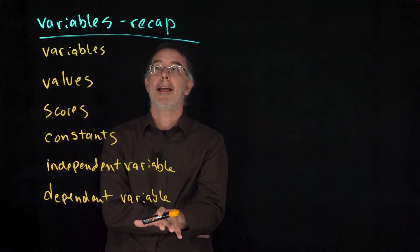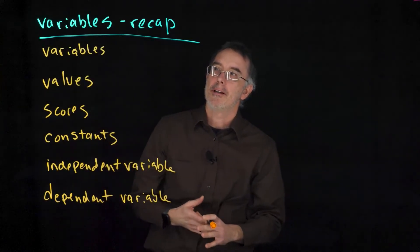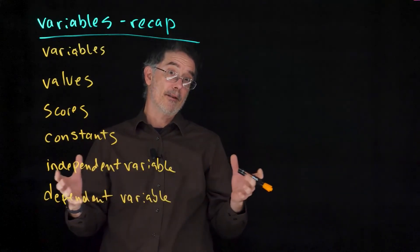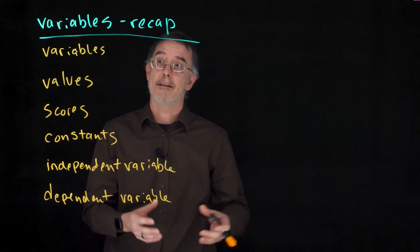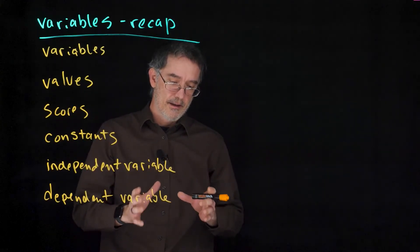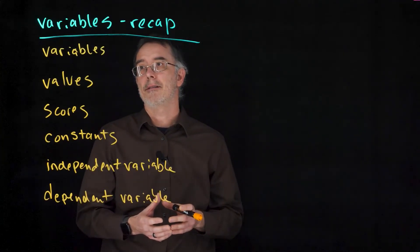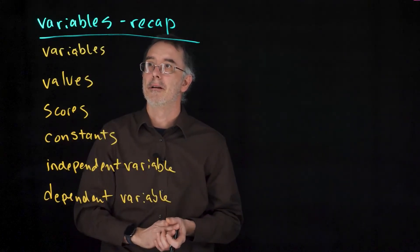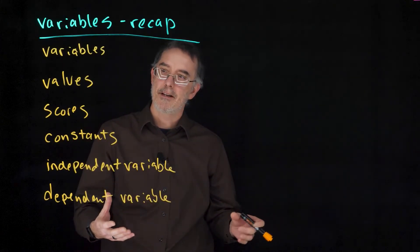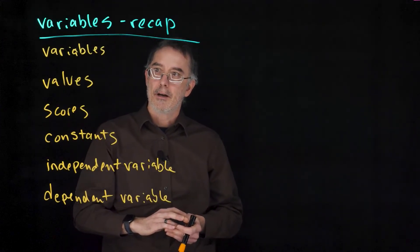I want to do a quick recap of the content of this video on variables. Variables are something that varies across the observations in a data set. Values are the different numbers or categories across any particular variable. The scores are each person or each observation's values on that variable.